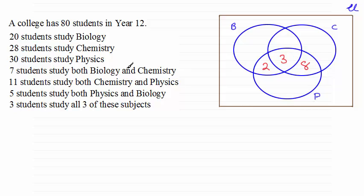Similarly, when we've got seven students study both biology and chemistry, we've got these two regions for biology and chemistry. And so that has to be a four there. So that four plus three makes seven.